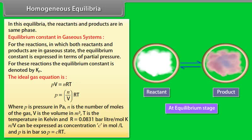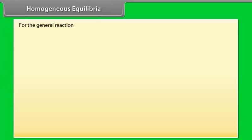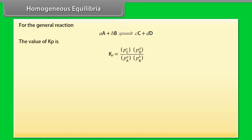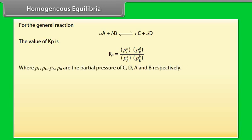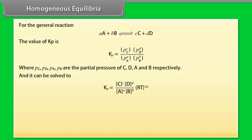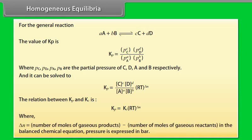For the general reaction, the value of Kp is expressed in terms of partial pressures Pc, Pd, Pa, Pb of C, D, A, and B respectively. The relation between Kp and Kc is: Kp = Kc × (RT)^ΔN, where ΔN equals the number of moles of gaseous products minus the number of moles of gaseous reactants in the balanced chemical equation, and pressure is expressed in bar.